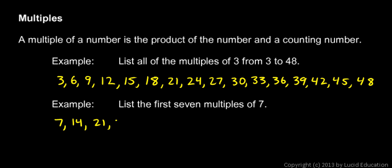would be 7 times 4 which is 28, 7 times 5 is 35, 7 times 6 is 42, and 7 times 7 is 49. So those are the first 7 multiples of 7. Now look at these numbers, look at